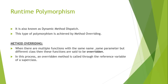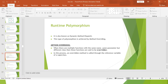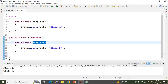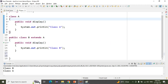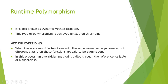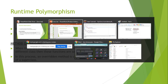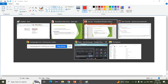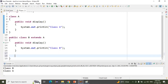In this process, the overriding method is called through the reference variable of the superclass. The overriding method here is the display method. If I want to call it, I have to create a reference variable of the parent class and call the method from that. So we will come here and create a main method.